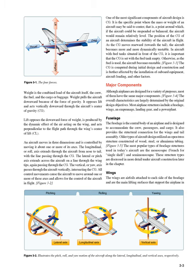Weight opposes lift and acts vertically downward through the aircraft's center of gravity, CG. Lift opposes the downward force of weight, is produced by the dynamic effect of the air acting on the wing, and acts perpendicular to the flight path through the wing's center of lift, CL. An aircraft moves in three dimensions and is controlled by moving about one or more of its axes. The longitudinal or roll axis extends through the aircraft from nose to tail, passing through the CG. The lateral or pitch axis extends across the aircraft on a line through the wing tips, again passing through the CG. The vertical, or yaw, axis passes through the aircraft vertically, intersecting the CG. All control movements cause the aircraft to move around one or more of these axes, allowing for control of the aircraft in flight.